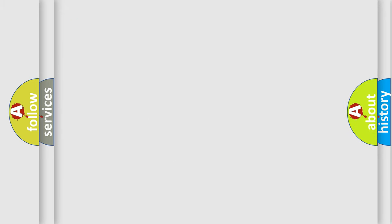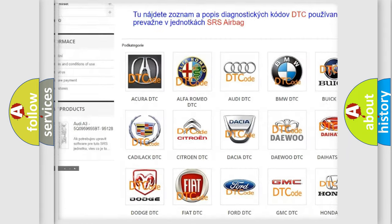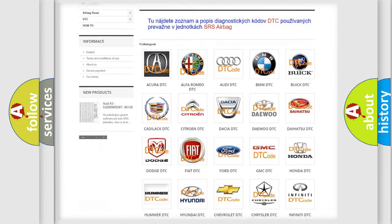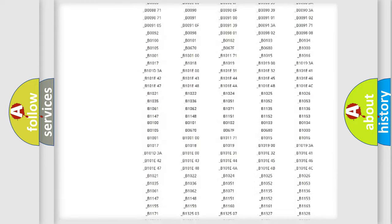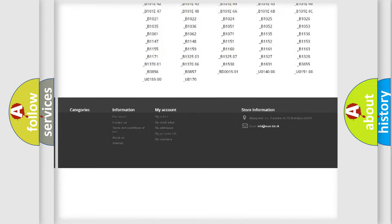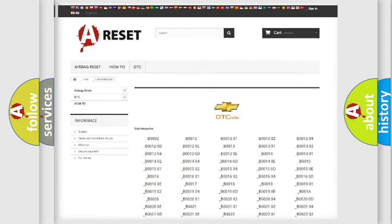Our website airbagreset.sk produces useful videos for you. You do not have to go through the OBD2 protocol anymore to know how to troubleshoot any car breakdown. You will find all the diagnostic codes that can be diagnosed in Chevrolet vehicles, and many other useful things.